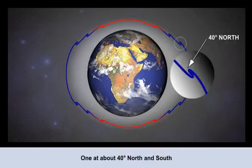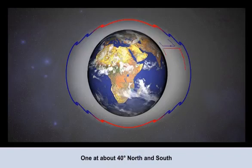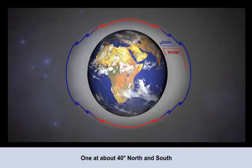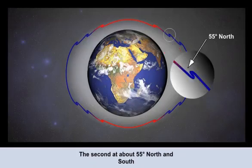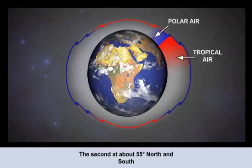The first of these breaks is at about 40 degrees latitude, where warm air circulating from the equator meets much cooler air circulating from mid-latitudes. This temperature difference in the troposphere causes a height change of the tropopause. The second tropopause break is at higher latitudes of about 55 degrees, where polar air meets tropical air along the polar front.